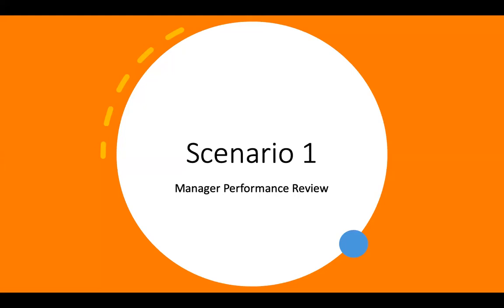Scenario number one: manager performance review. In a multirater feedback for a manager, the raters would include the president or CEO of the company, other managers within the department, and the employees who work directly for this manager. The assessments are made anonymous and turned into the manager to look over the results along with his or her supervisor.